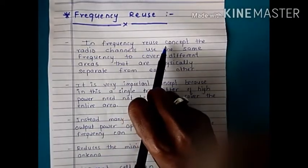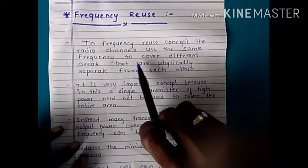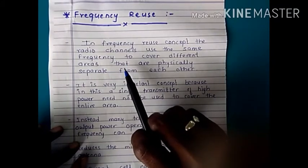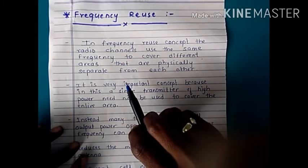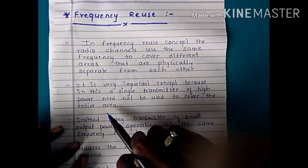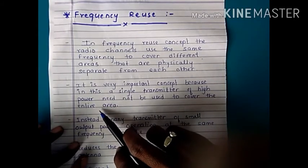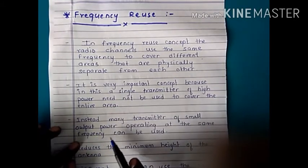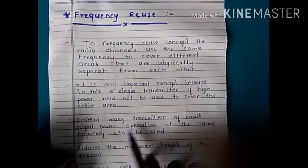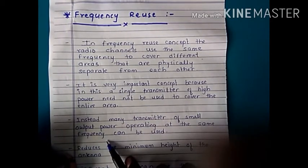In frequency reuse concept, radio channels use the same frequency to cover different areas that are physically separate from each other. It is a very important concept because a single high-power transmitter need not be used to cover the entire area. Instead, many transmitters of small output power operating at the same frequency can be used.